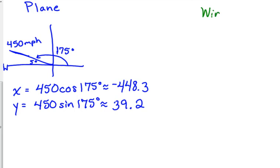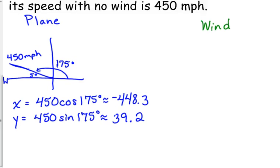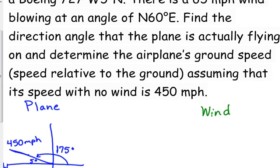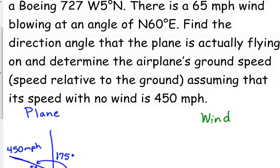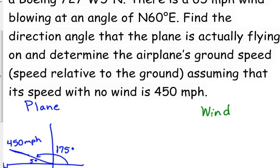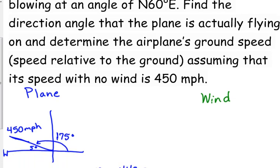Now let's look at the wind. The wind is 65 miles per hour, pretty intense wind, but it's up in the air. Those are stronger up there in the atmosphere. 65 mile per hour wind blowing at an angle of north 60 degrees east. So we start at north, we go 60 degrees towards east, and it is 65 miles per hour.